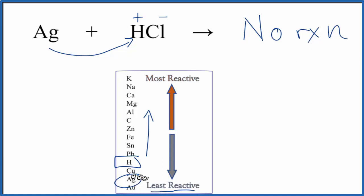Because silver right here is below hydrogen on the activity series. This is Dr. B with the net ionic equation. Actually, there is no net ionic equation. There's no reaction with silver plus hydrochloric acid, Ag plus HCl. Thanks for watching.